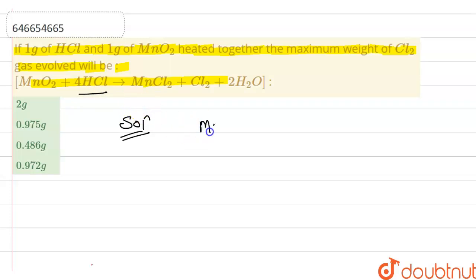So moles of HCl is mass 1 gram upon molar mass 36.5. And moles of Cl2, that is 1 by 4 into 1 upon 36.5, because 1 by 4 is also given here.